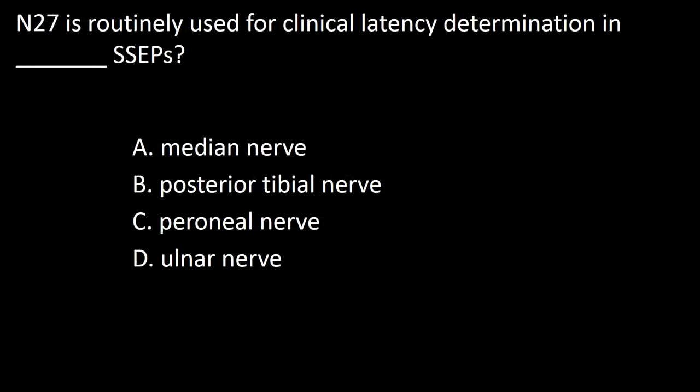Next question: N27 is routinely used for clinical latency determination in somatosensory evoked potentials of which nerve? A, median nerve; B, posterior tibial nerve; C, peroneal nerve; D, ulnar nerve.